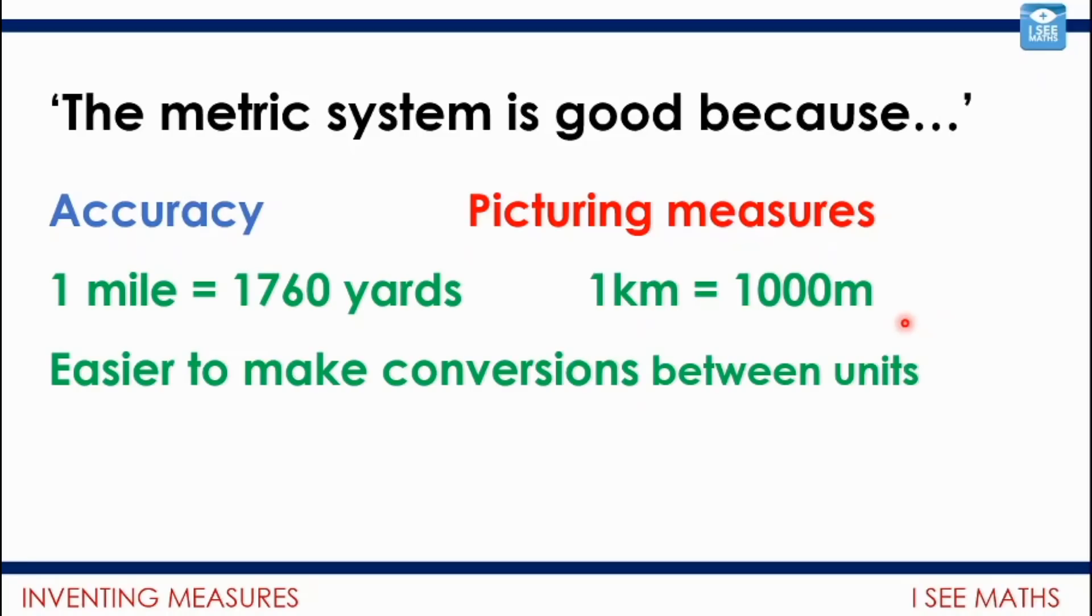There is another reason why our metric system is so brilliant. Let's compare it to a non-metric system as well. One mile equals 1760 yards. One kilometer is a thousand meters. Now, if I was to say, well, how many, what is five miles in yards? That, I would say, is a much more difficult calculation than if I'm saying, well, five kilometers is how many meters. With our metric system, it's easier to make conversions between units. One of the reasons why it's so effective.